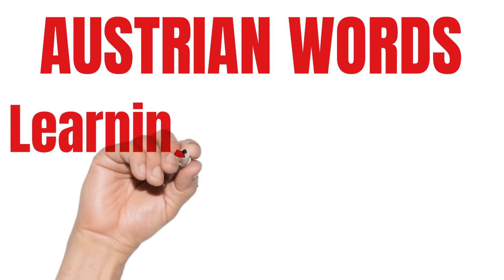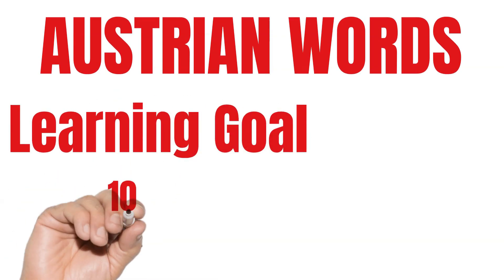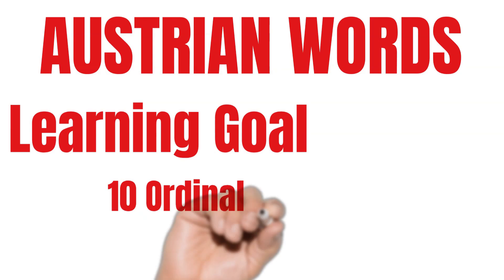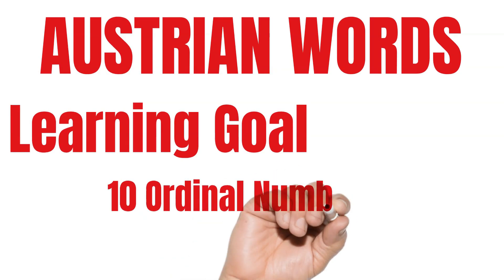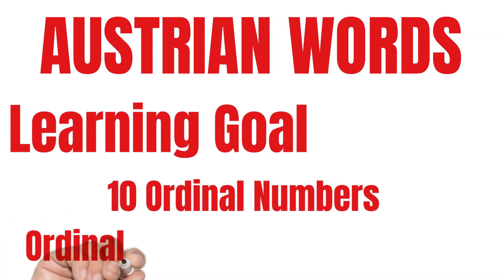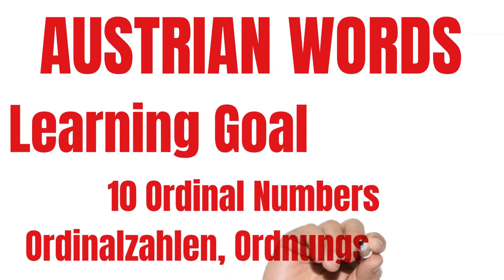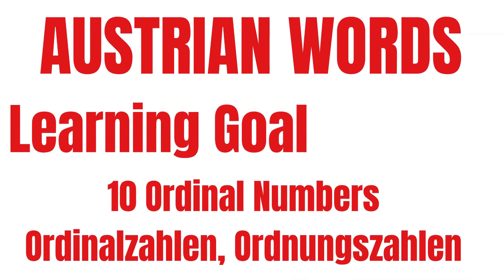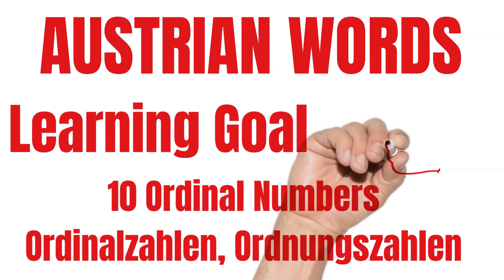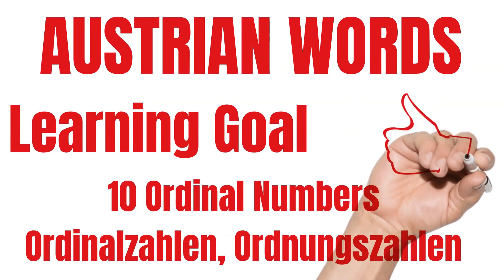The learning goal of this Austrian German tutorial is to learn the first ten ordinal numbers in Austrian German. As mentioned before, ordinal numbers are called Ordinalzahlen or Ordnungszahlen in German. The good thing for learners is that they are very similar in Austrian German and in Standard German.